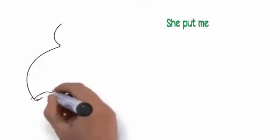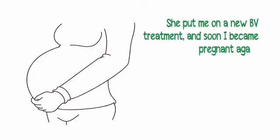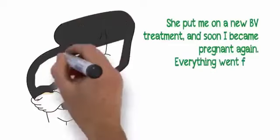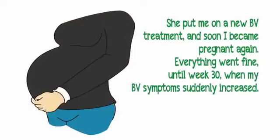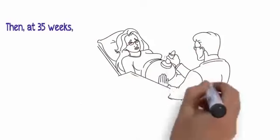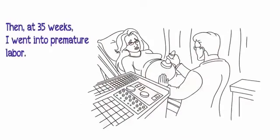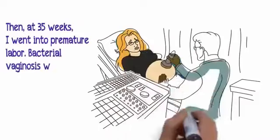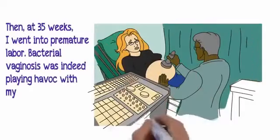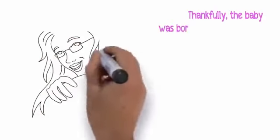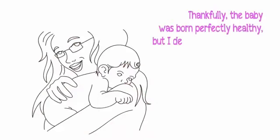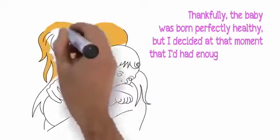She put me on a new BV treatment and soon I became pregnant again. Everything went fine until week 30 when my BV symptoms suddenly increased. Then at 35 weeks, I went into premature labor. Bacterial vaginosis was indeed playing havoc with my body and even putting my baby at risk. Thankfully the baby was born perfectly healthy, but I decided at that moment that I'd had enough.